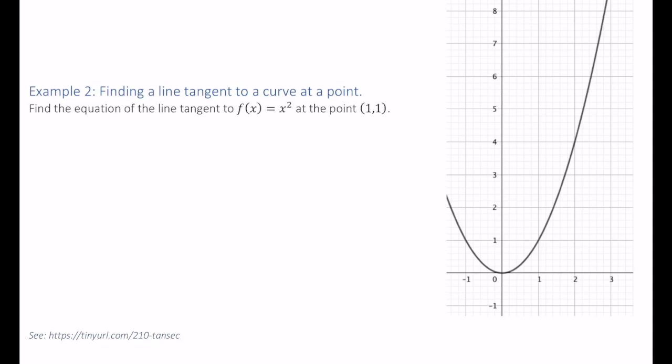Example 2, finding a line tangent to a curve at a point. Find the equation of the line tangent to f(x) = x² at the point (1,1).